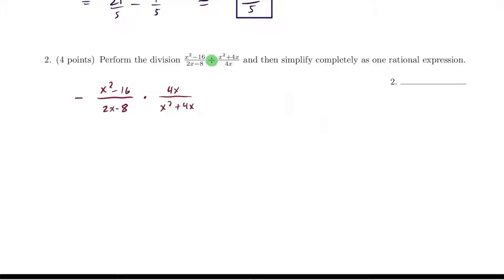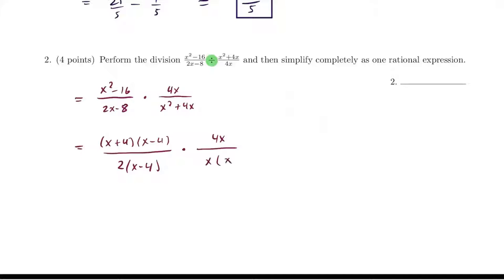Now we can factor everything. On top, x squared minus 16 factors into (x + 4)(x − 4). On the bottom, 2x minus 8 has GCF 2, giving 2(x − 4). The next numerator is just 4x, and the bottom factors as x(x + 4) by taking out GCF x. Now cancel common factors: (x + 4) cancels, (x − 4) cancels, x cancels with x, and 4 and 2 reduce. This simplifies to simply 2 on top — that's our simplified answer.